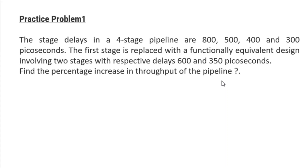So this is our question. Basically the question is saying we first have a four-stage pipeline with stage delays of 800, 500, 400, and 300 picoseconds. Then we have changed this pipeline and converted it to a two-stage pipeline with delays of 600 and 350 picoseconds. Then we need to compare the throughput of the pipeline. First we will calculate the throughput for the four-stage pipeline, then for the two-stage pipeline, and compare.